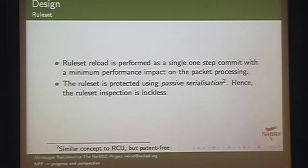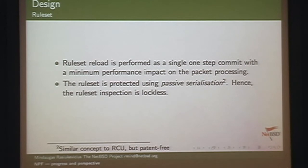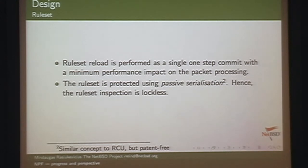For lockless rule set swapping we use passive serialization. Passive serialization is a similar concept to RCU — read, copy, update — except it's a little bit older and patent-free. This allows lockless processing of the rule set. On the writer/reload side, you just need to make sure there are no readers running after some point in time. There is one lock just to prevent running multiple reloads simultaneously, but the key point is that rule set reload doesn't affect packet processing.